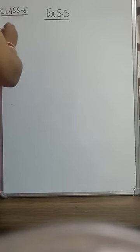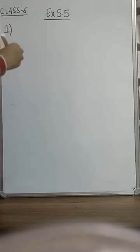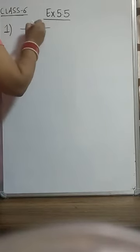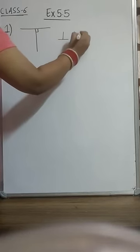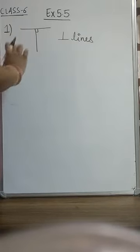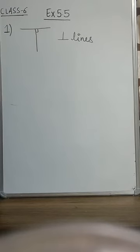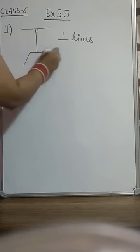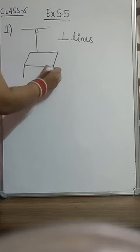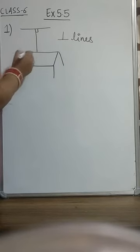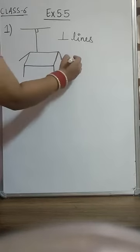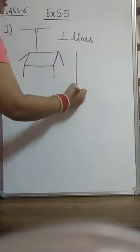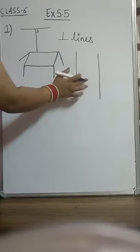In question number 1 of exercise 5.5, we will talk about perpendicular lines. The two lines which make a 90 degree angle with each other are called perpendicular lines, and this is the symbol for perpendicular lines. In part A, they are asking about the adjacent table top — you know, this is a 3D figure. The table top makes a perpendicular angle, as you can see. You can also see the railway lines and lines of a triangle — those are parallel lines, not perpendicular lines.